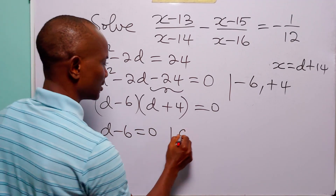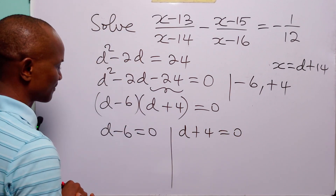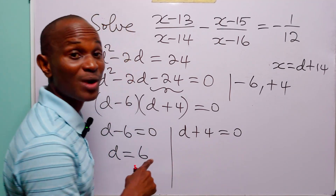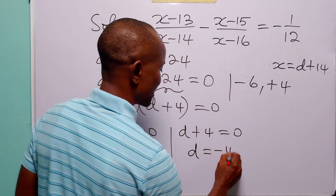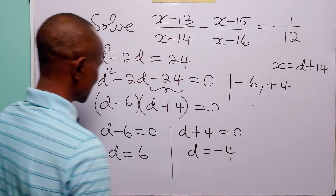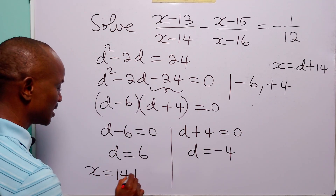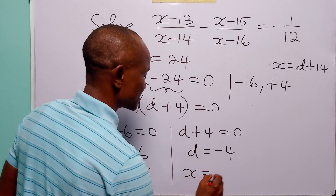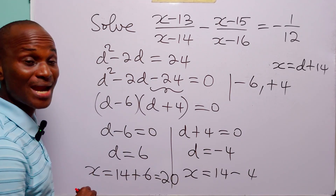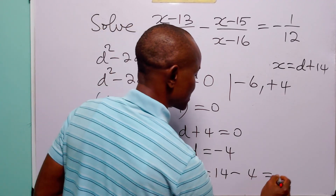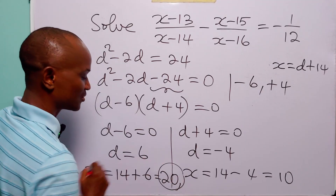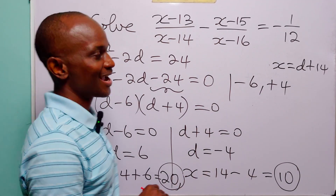This means either d minus 6 equals 0, giving d equals 6, or d plus 4 equals 0, giving d equals minus 4. But remember we are looking for x, and x equals d plus 14. So x equals 14 plus 6, which is 20, and x equals 14 minus 4, which is 10. The two values of x that satisfy this rational equation are x equals 20 and x equals 10.